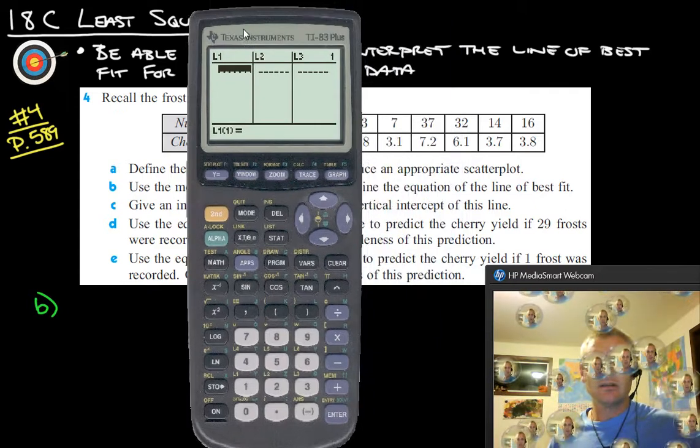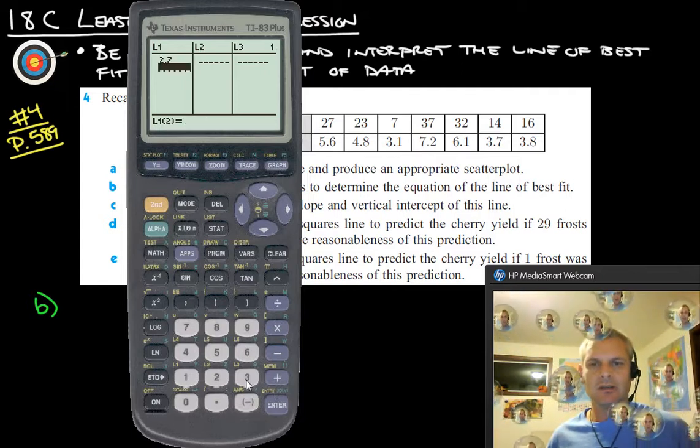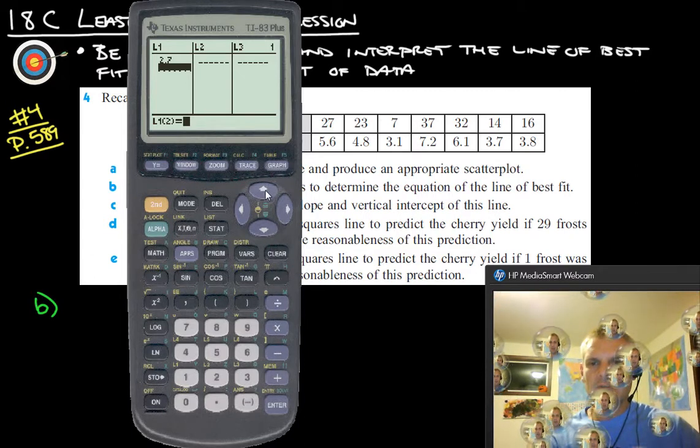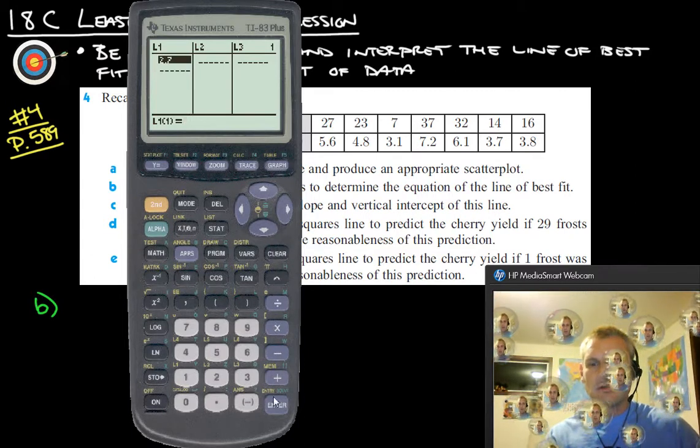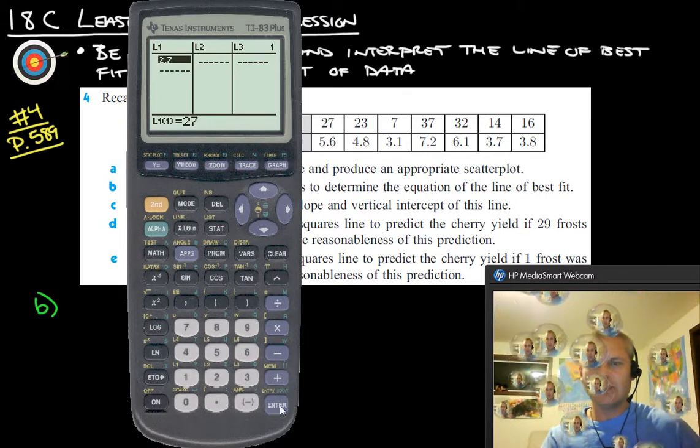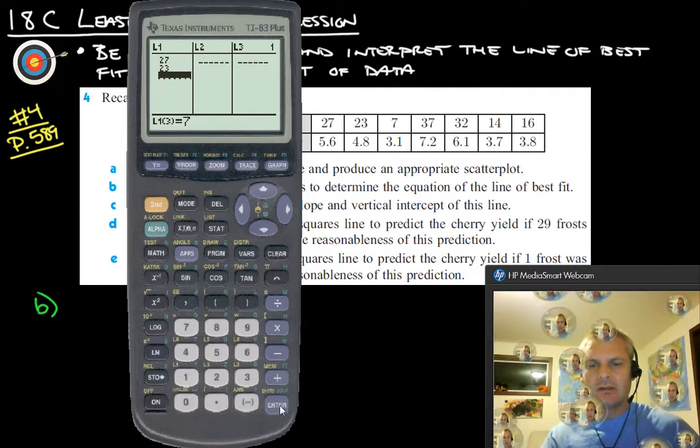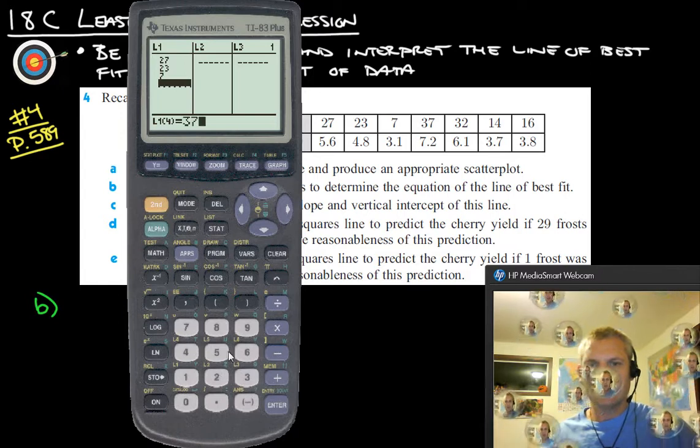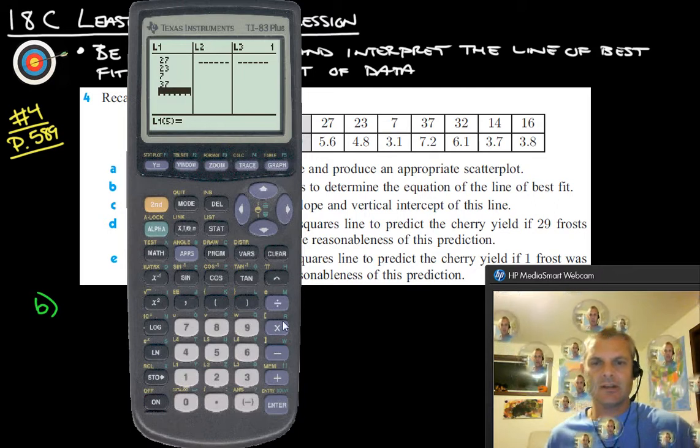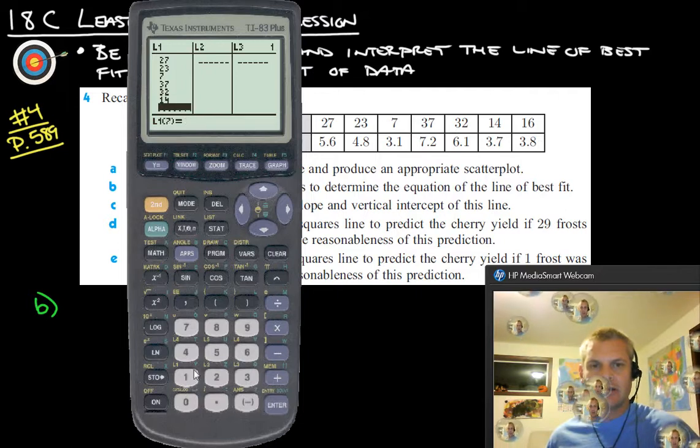And let's enter in our data. So we have 2.7, not 2.7, but 27. So let's clear that out. I think we can just re-enter it. 27. There we go. 23, 7, 37. So, again, we've just got to enter all this data. The top line here all goes into the list one, which is our X column. Right? And 32, and 14, and 16.